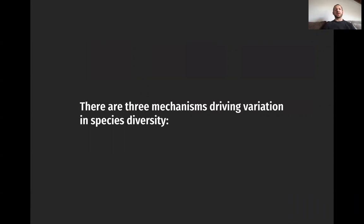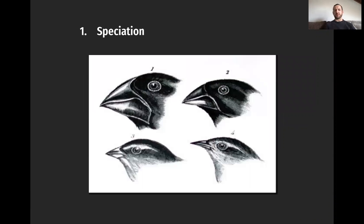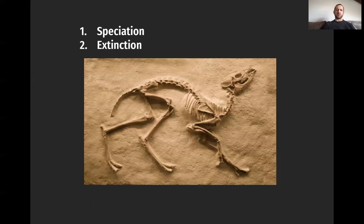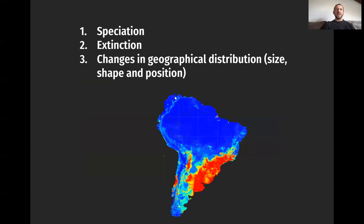Research in our field, particularly over the past two decades, has come to the realization that there are only three mechanisms that effectively change species diversity. The first is speciation, which is the formation of new species. The second is extinction, which is the loss of species. And finally, changes in geographical distributions, which might include changes in size, shape, and latitudinal position. Curiously, this third area is relatively poorly understood compared to the large number of studies on drivers of speciation and extinction.